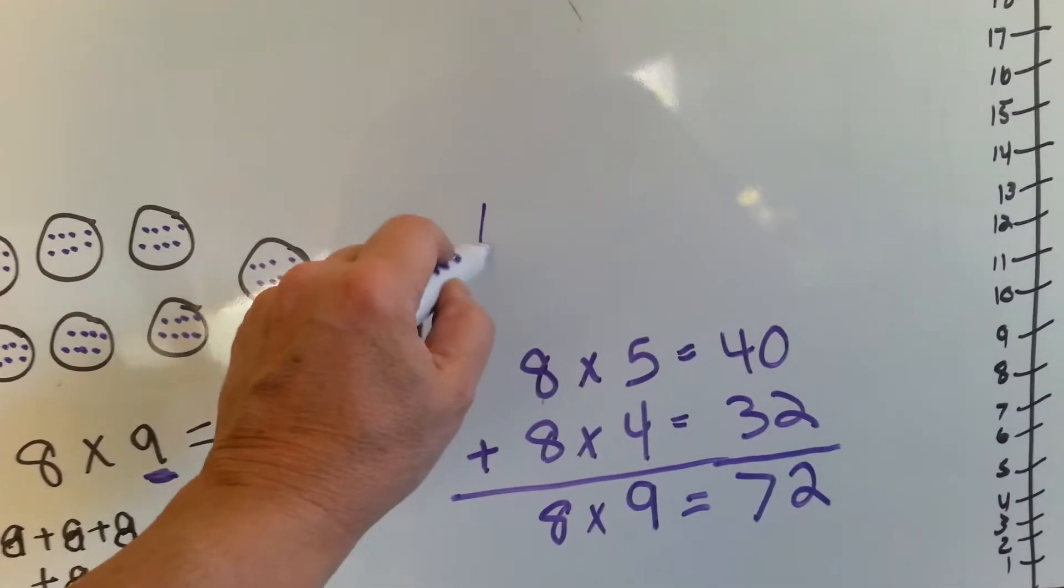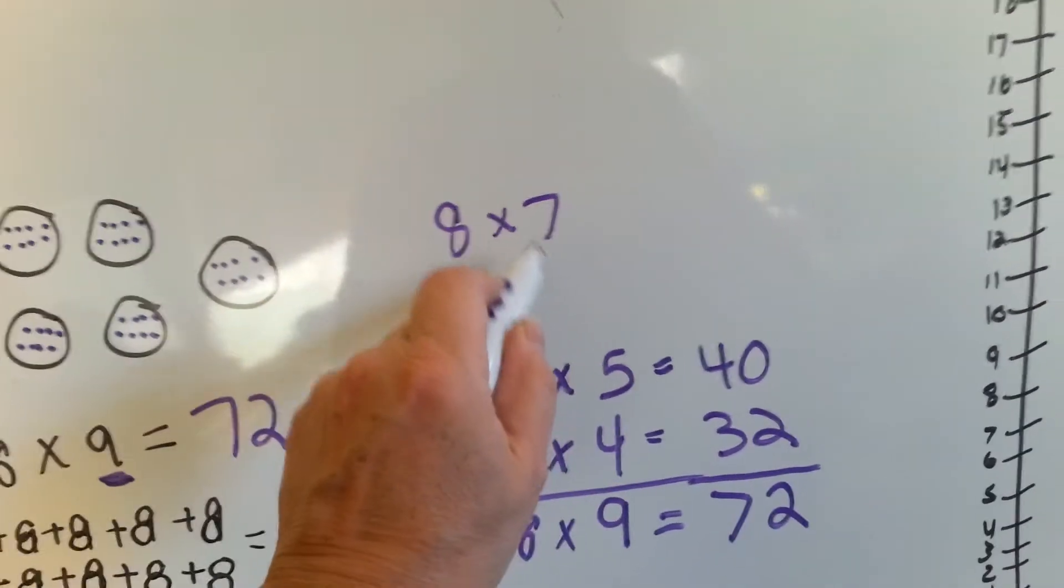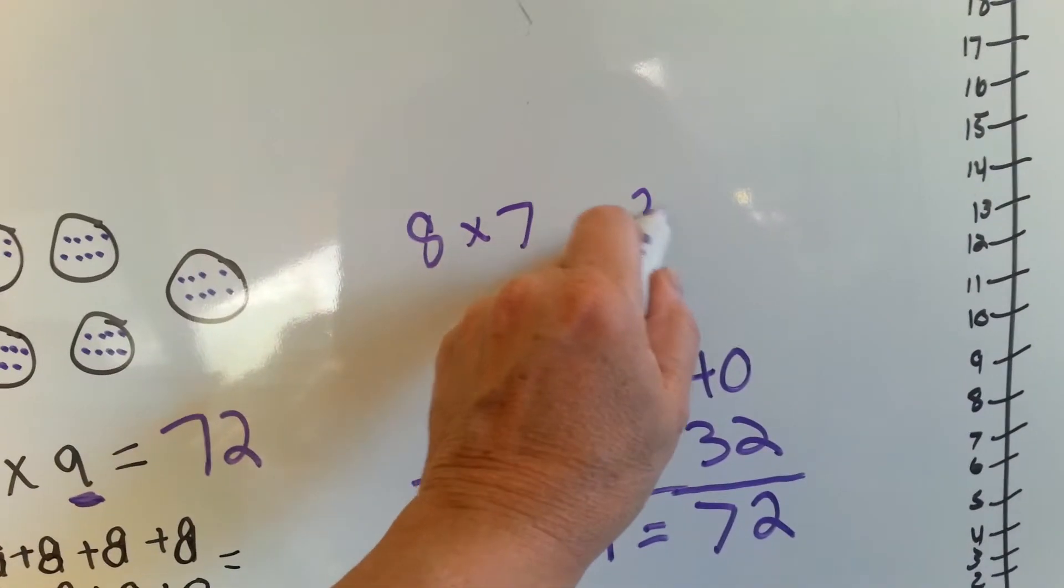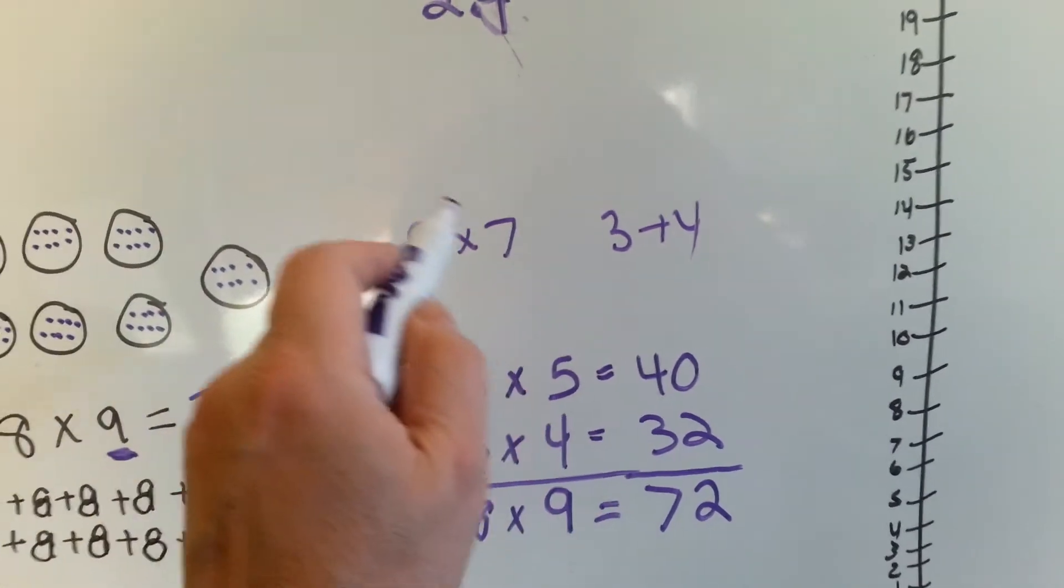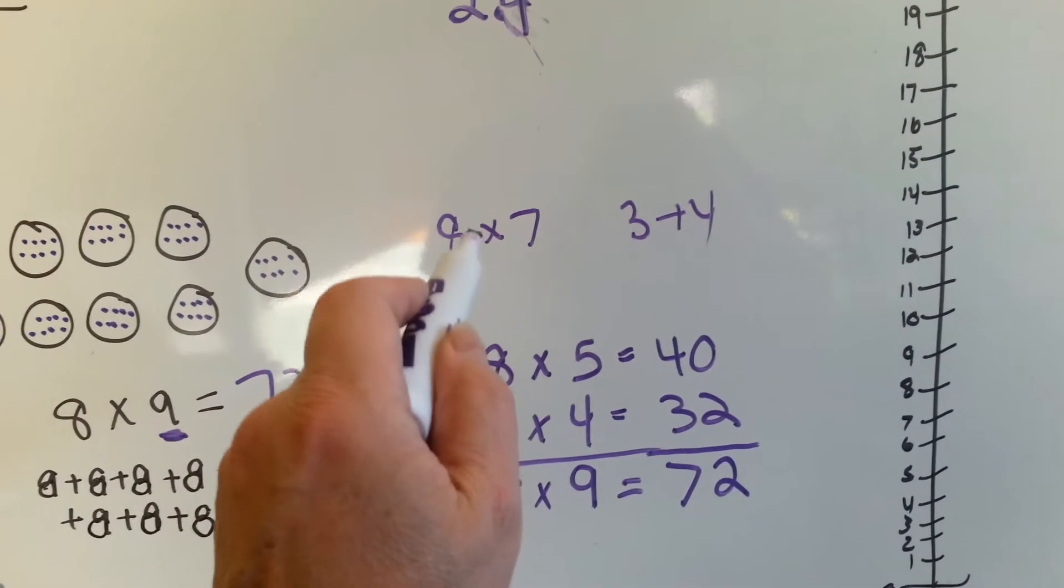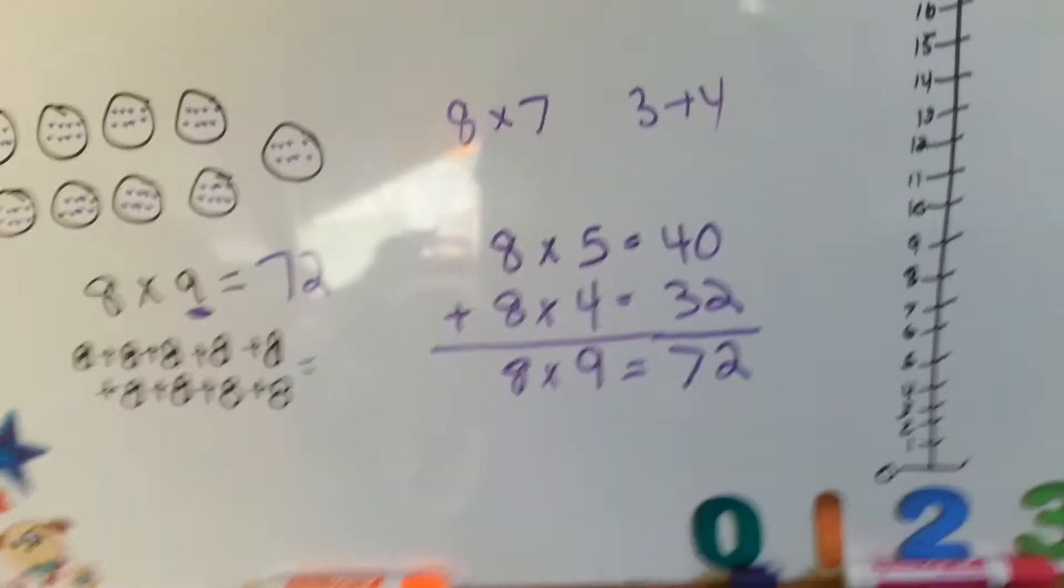You could do eight times seven that way. You can break the seven into a three plus a four, and say eight times three plus eight times four, then add that together.